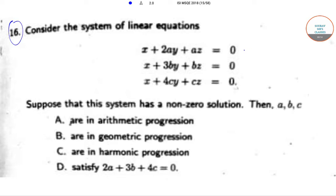In question number 16, we need to consider the system of linear equations: x plus 2ay plus az equals 0, x plus 3by plus bz equals 0, and x plus 4cy plus cz equals 0. These are the three linear equations.